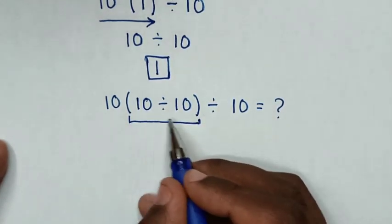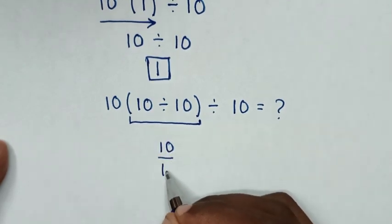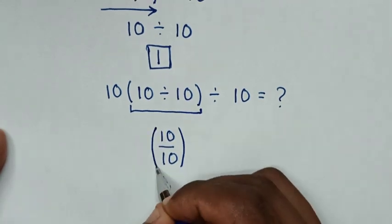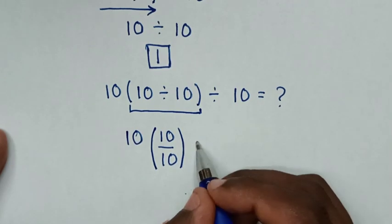which is the same as 10 divided by 10 is 10 over 10. Then bracket. Then before here was 10, and here is divided by 10.